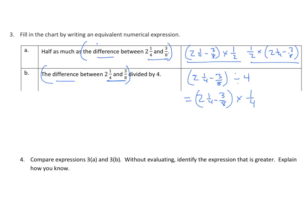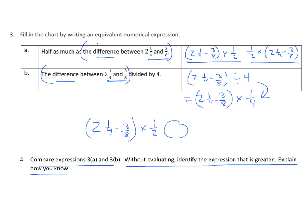Now compare expressions 3A and 3B. Without evaluating, identify which is greater and explain how you know. Converting 3A gives (2¼ − 3/8) × 1/2, and 3B gives (2¼ − 3/8) × 1/4. If I take a number and multiply by 1/2 — dividing by 2 — I get a greater result than multiplying by 1/4 — dividing by 4. So 3A is clearly greater than 3B.